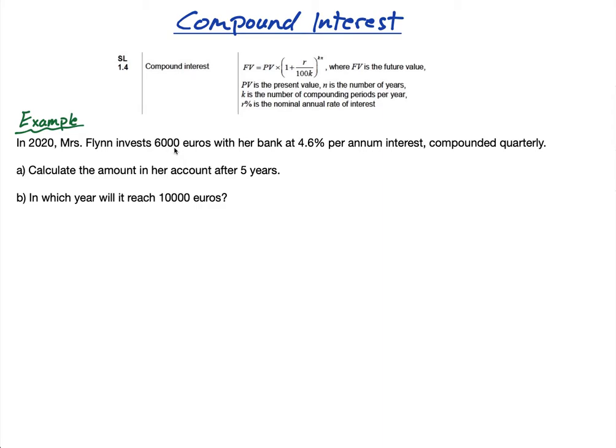Mrs. Flynn invests 6,000 euros with her bank at 4.6% per annum interest, compounded quarterly. There's a lot of important information here: 4.6% per annum, compounded quarterly. Now you are lucky that the IB have decided to give us the compound interest formula. They didn't do that in the past, so we have this compound interest formula.